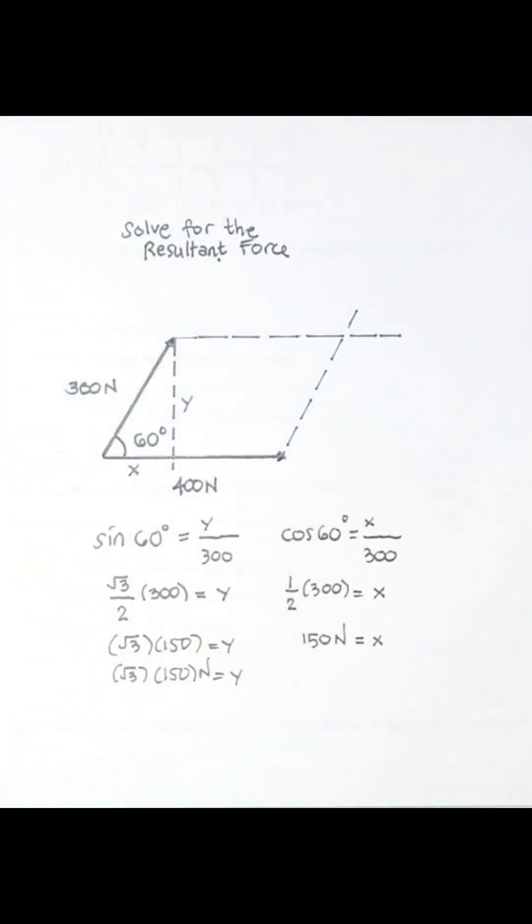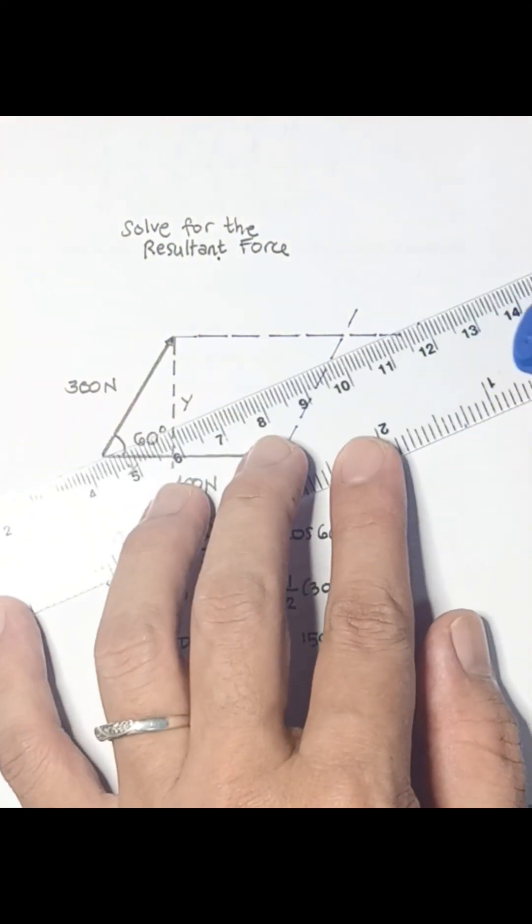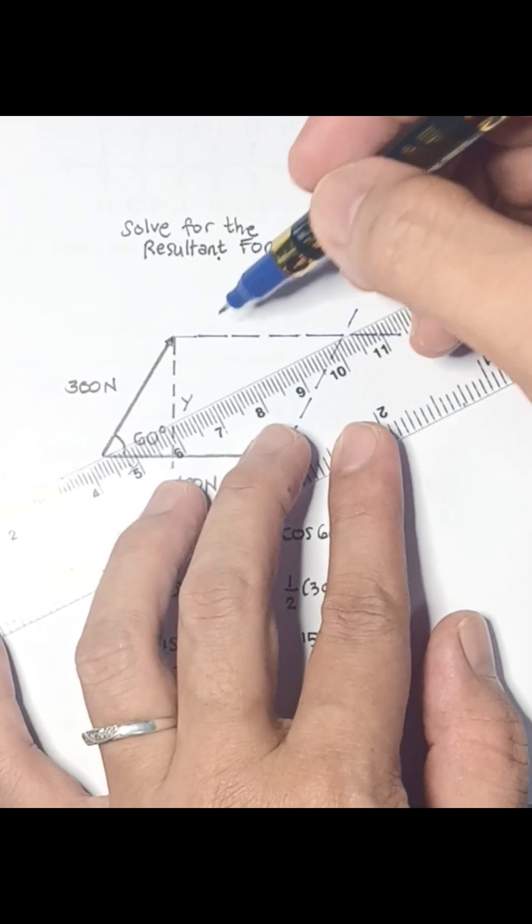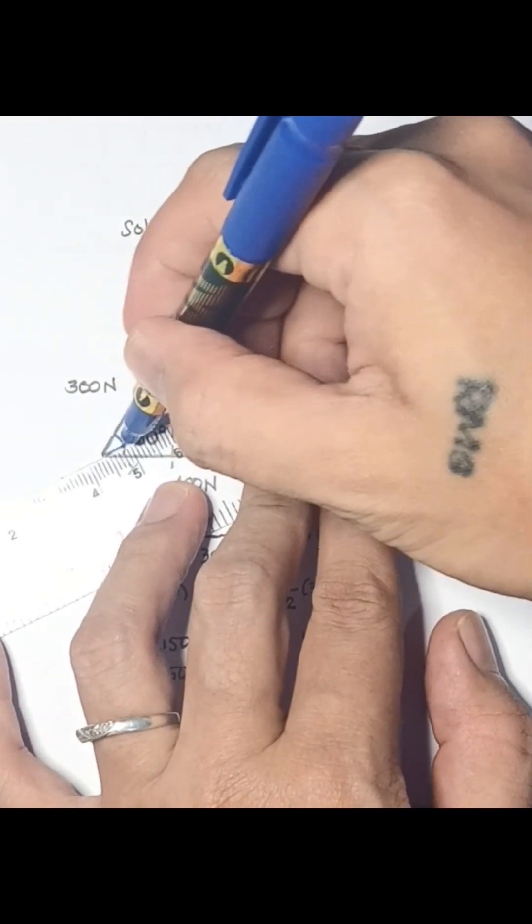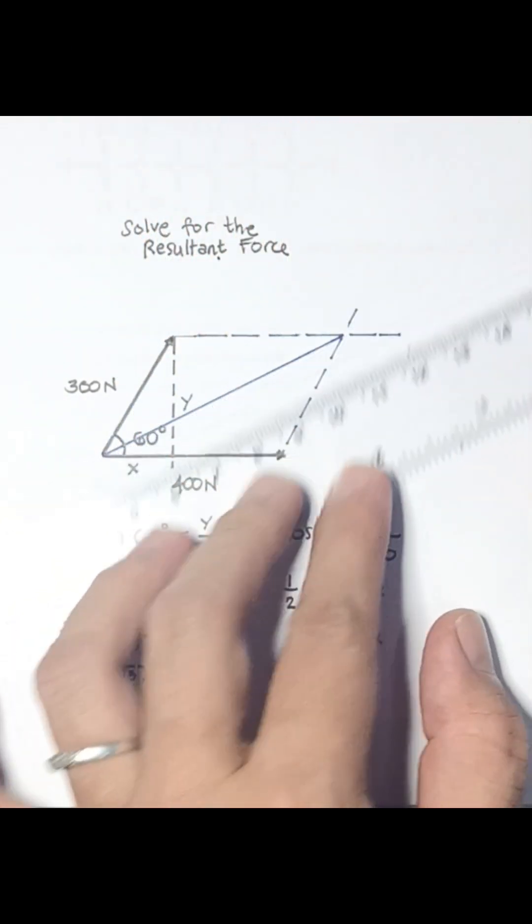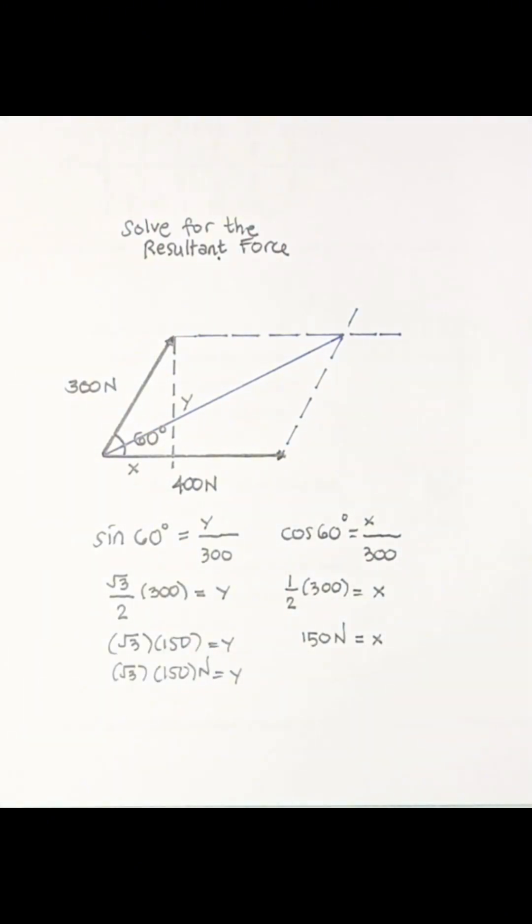We have here a parallelogram by drawing a line from the vertex between 300 newtons and 400 newtons and extending it to the vertex of the imaginary lines.